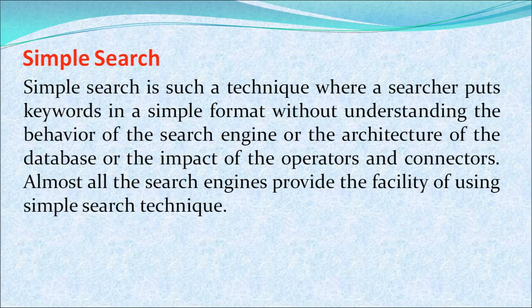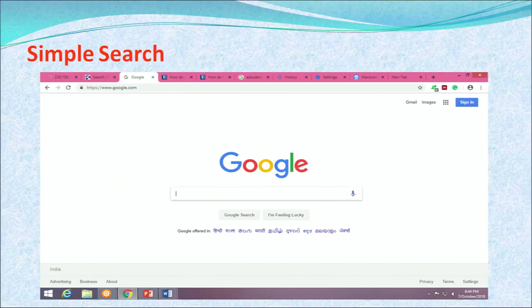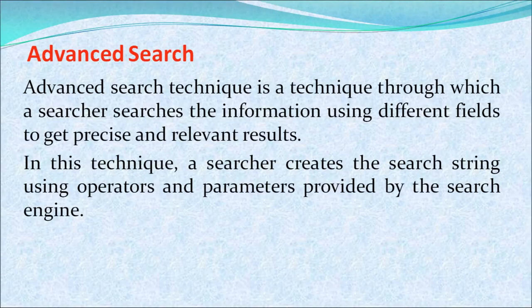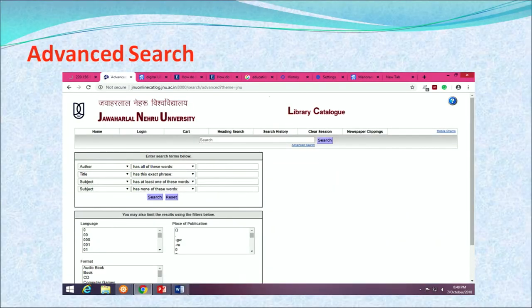Simple search is a technique where a searcher puts keywords in a simple format without understanding the behavior of the search engine, the architecture of the database, or the impact of operators and connectors. Almost all search engines provide the facility of simple search. A screenshot of Google illustrates simple search. Advanced search is a technique through which a searcher searches information using different fields to get precise and relevant information. In this technique, the searcher creates a search string using operators and parameters provided by the search engine.